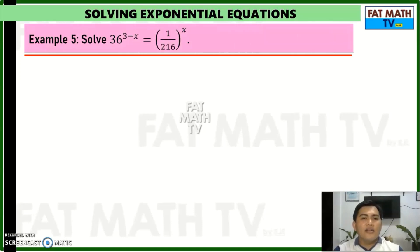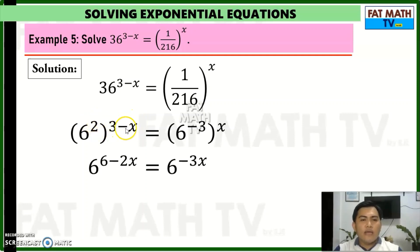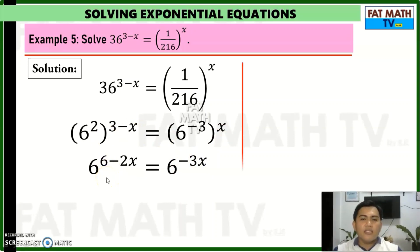Solve 36 raised to (3 minus x) equals 1 over 216 raised to x. We use base 6: 36 is 6 squared and 1 over 216 is 6 raised to negative 3. So we replace 36 with 6 squared, copying (3 minus x), and 1 over 216 with 6 raised to negative 3, copying x. Applying the laws of exponents: 2 times 3 gives 6 and 2 times negative x gives negative 2x on the left; on the right, negative 3 times x gives negative 3x.